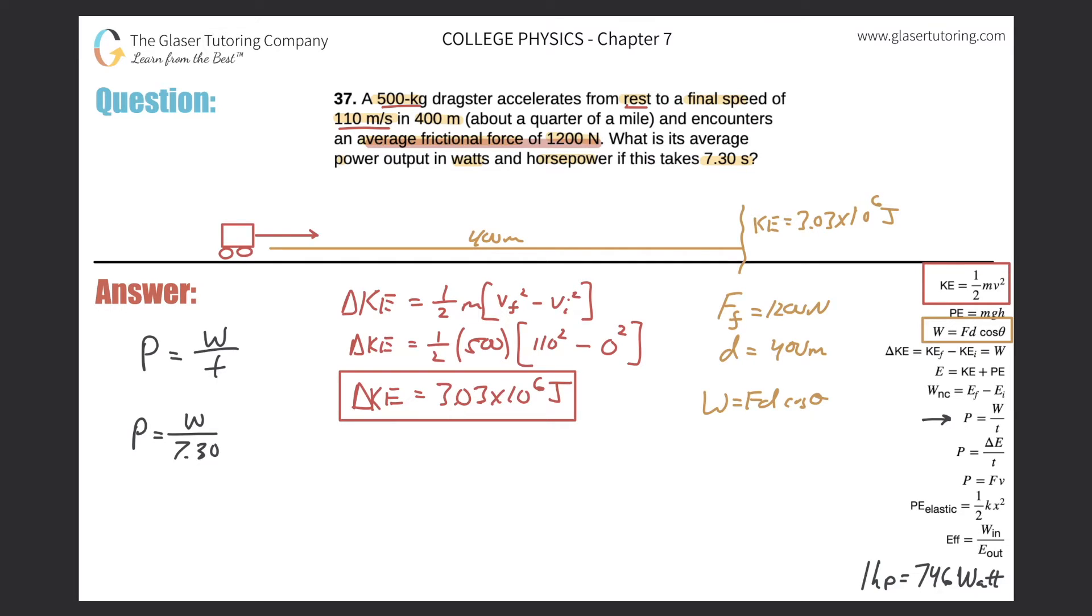In this particular case, the work basically, the sign here would be negative because the frictional force is pointing in that direction, but the dragster is moving in that direction. So those vectors are opposed, 180 degrees. So therefore this theta here would be 180 and a cosine of 180 is negative one. So the work here would be a negative value, meaning that friction is taking work out of the system. And that should make sense. It's taking work out of the system, which is all true.